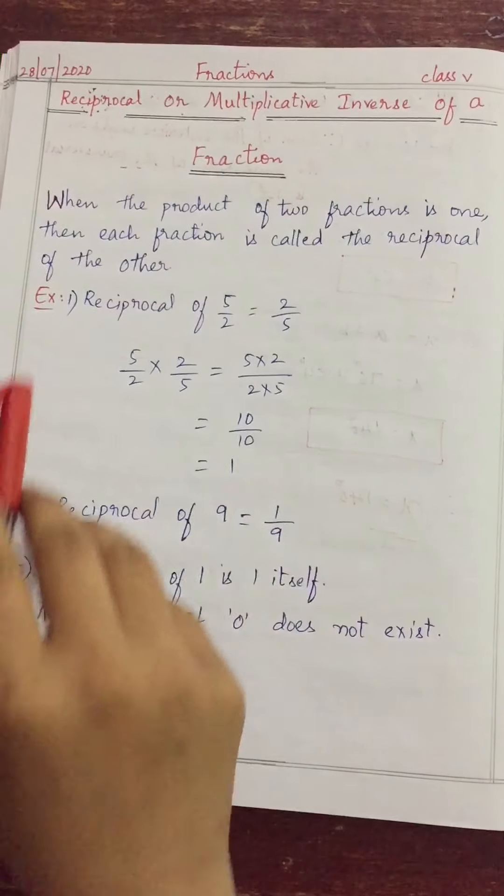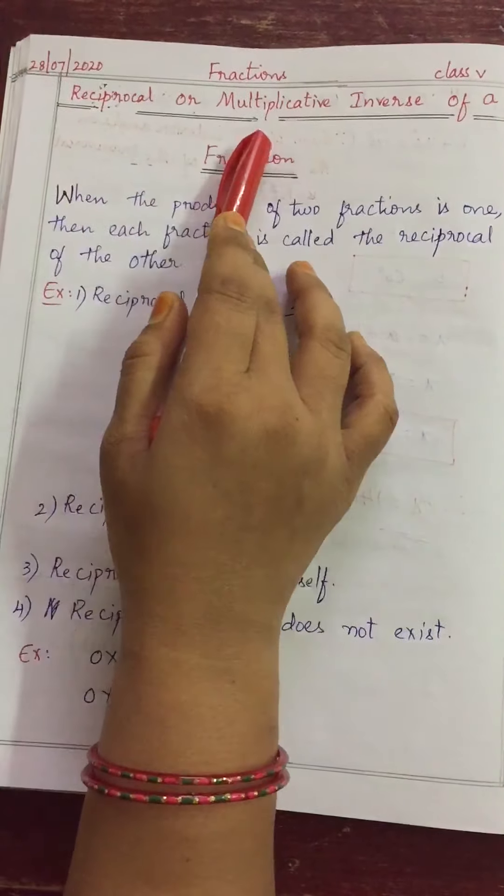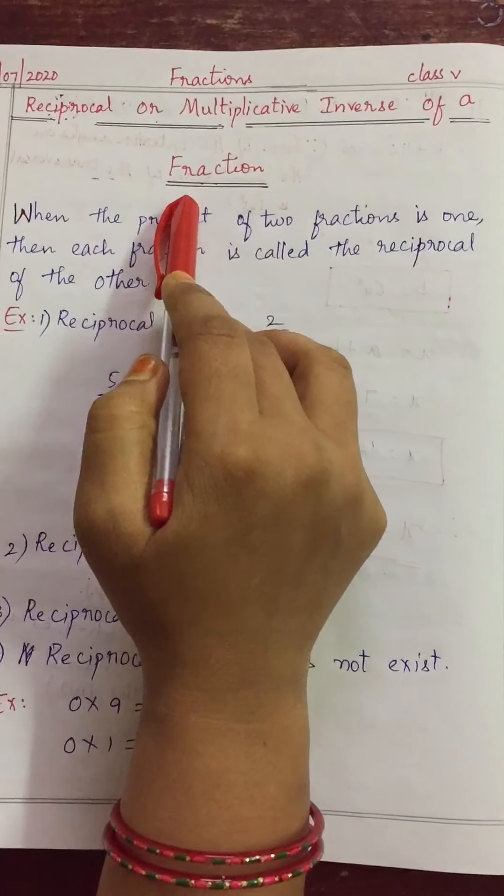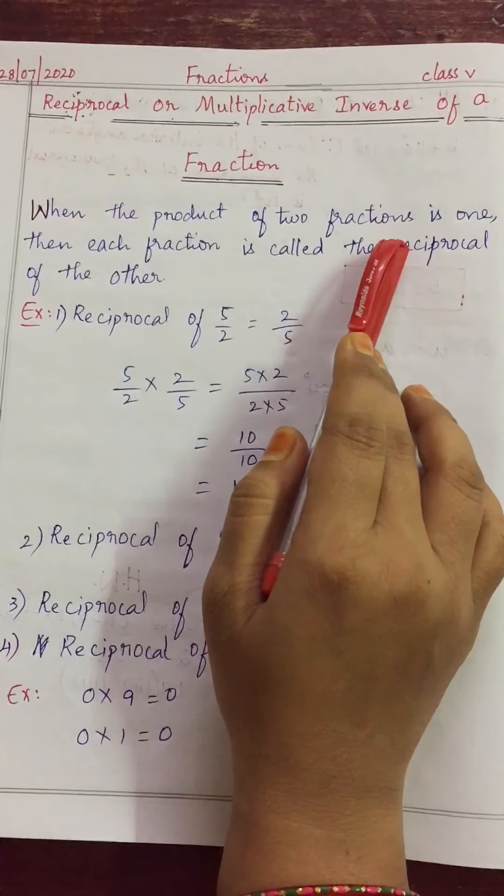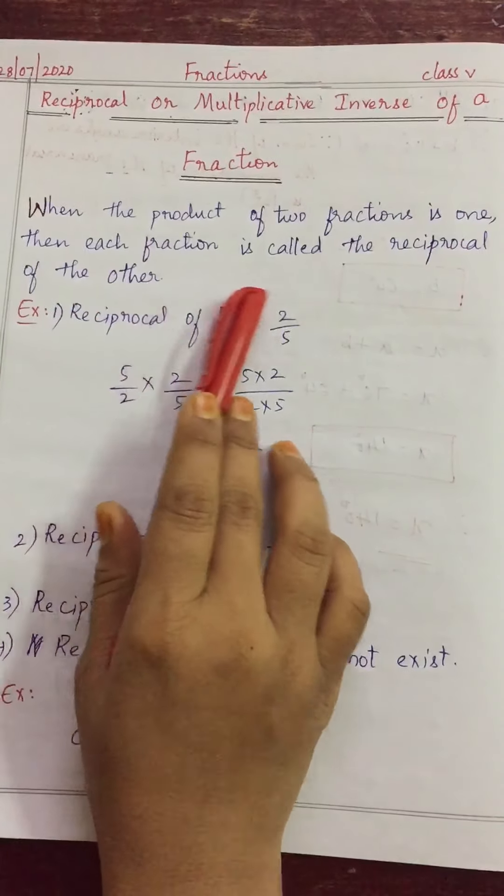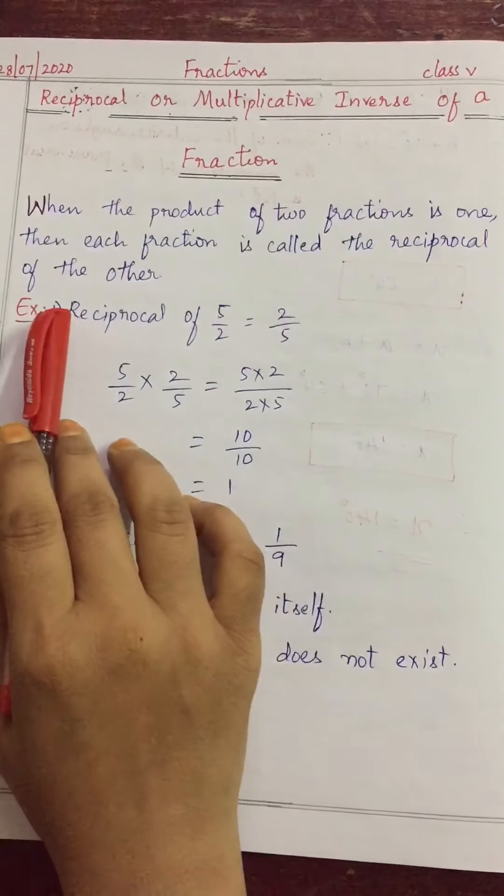first we have to see reciprocal or multiplicative inverse of a fraction. What is reciprocal? When the product of two fractions is one, then each fraction is called the reciprocal of the other.